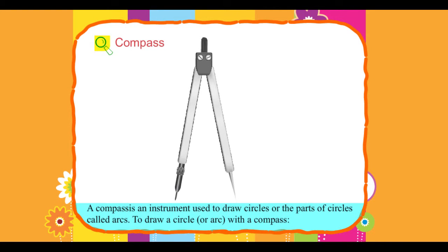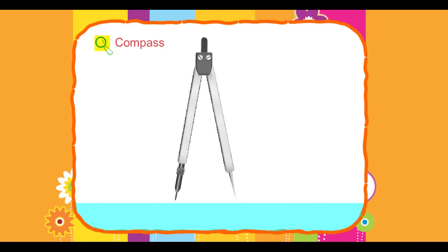Compass. A compass is an instrument used to draw circles or the paths of circles called arcs. To draw a circle or arc with a compass, use a compass to draw a circle of radius 4 cm.